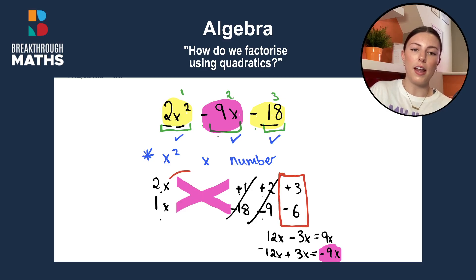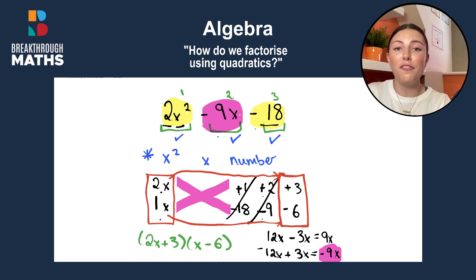All we have to do then is join them up. So we join up the pairs that we picked, the 2x and the 1x, and the plus 3 and the minus 6. We join them up going across ways to give us our final answer of 2x plus 3 and x minus 6. And that's how you factorise using quadratics.